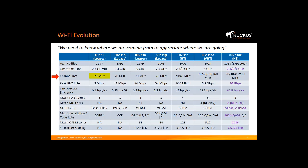For channelization, the standard started with 20 MHz, expanded to 40 MHz in 11n, and up to 160 MHz in 11ac and 11ax. We see very little 160 MHz today, but with 6 GHz this may become reality. The peak data rate started at 2 Mbps and with 11ax we're talking up to 10 Gbps. What really matters, however, is spectrum utilization — measured by link spectral efficiency. The first standard achieved 0.1 bits per second per hertz; with 11ax we're pushing 62.5 bits per second per hertz.